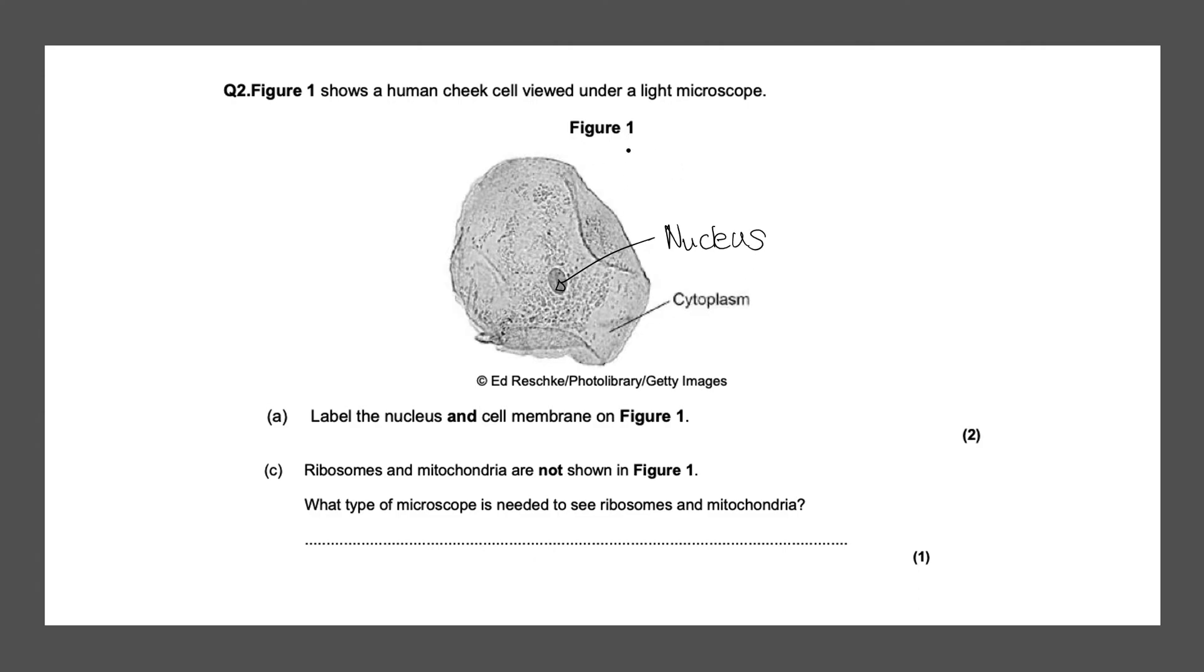And remember a cell membrane. So over here. This over here would be the cell membrane. Remember this is not a plant cell so you won't have a cell wall. So you would know that the outer shell would be the cell membrane. Next part.